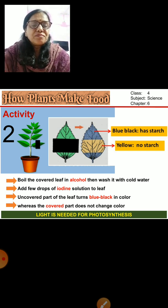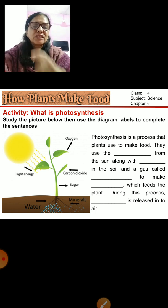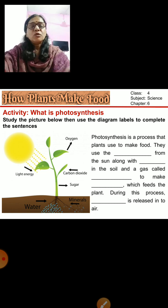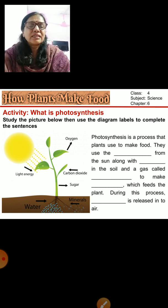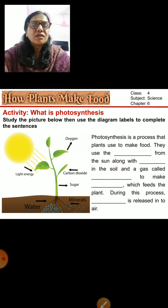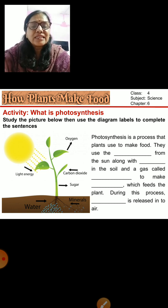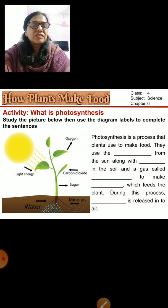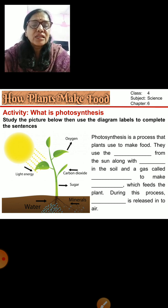Moving further, here is a summary of the process of photosynthesis. Study the picture and write the correct words in the blanks to complete the sentences. The sun is there, light is falling on the plant, carbon dioxide is taken in, sugar is produced, and oxygen is also released into the air.